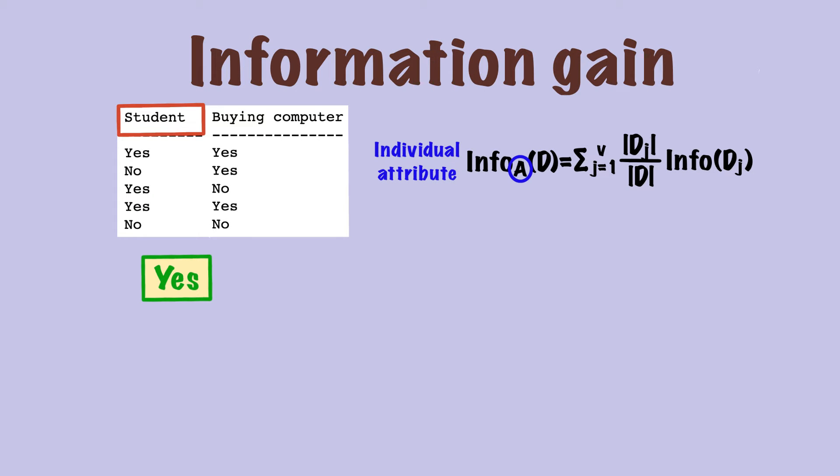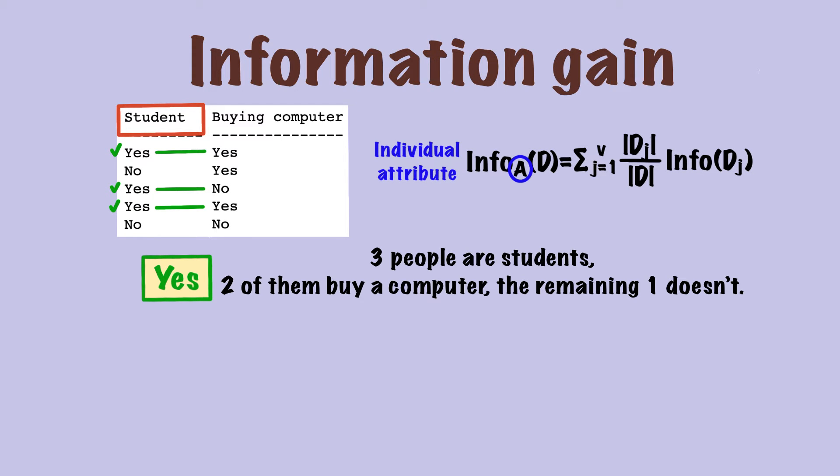We start with the class yes. If you look at the attribute student, you can see three people are students, two of them buy a computer, one of them doesn't. In fact, we can calculate the first part of the formula by knowing that three people are students. Since dj over d is just the number of data in class yes divided by the total number of data points, the first part of the formula is 3 over 5.